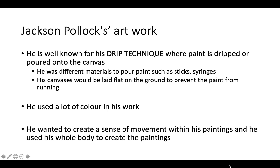Jackson Pollock is well known for his drip technique, where paint is dripped or poured onto the canvas. He used different materials to pour paint, such as sticks or syringes. A syringe is just like a little tube with a button at the end that you press to squeeze the liquid out.